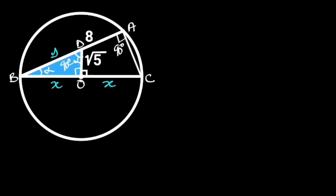Next, let's focus on triangle ABC. Notice that triangle ABC has a common angle with triangle BDO, which we have already taken as alpha. Triangle ABC is also a right triangle, so the remaining angle will be 90 degrees minus alpha. Reason: the sum of angles in a triangle is 180 degrees.